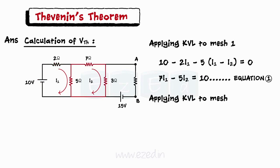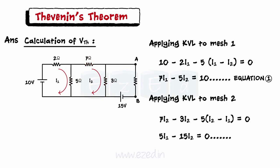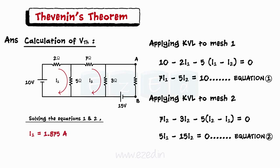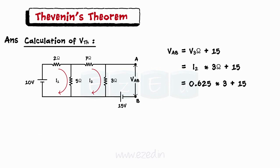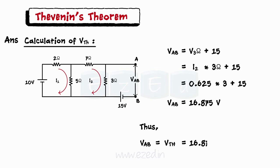Applying KVL to mesh 2, we get 5I1 minus 15I2 equals 0. Solving the two equations, we get I1 equals 1.875 Amperes and I2 equals 0.625 Amperes. Thevenin's voltage, or voltage across AB, is the algebraic sum of the voltage drop across the 3 Ohms resistor and the 15V source, giving VAB equal to Vth equals 16.875V.